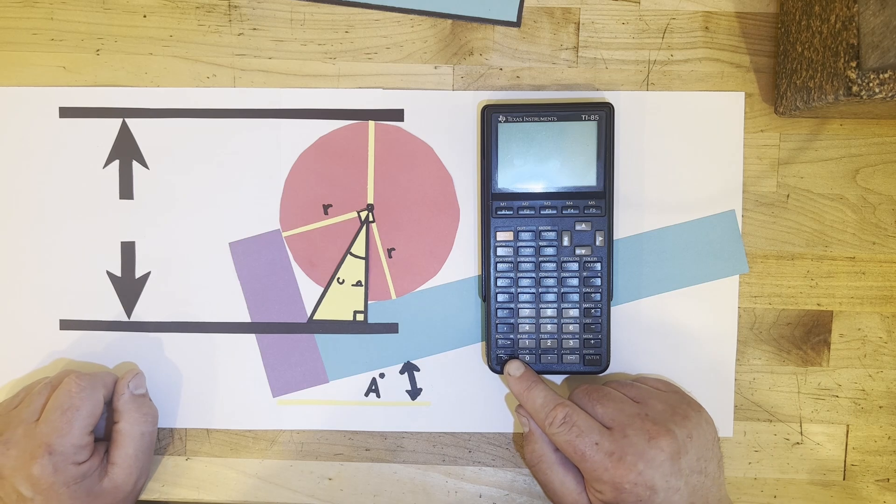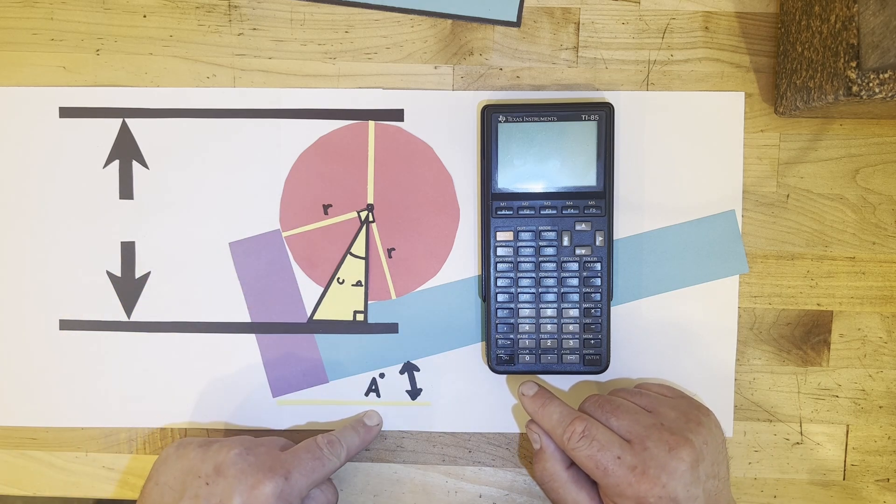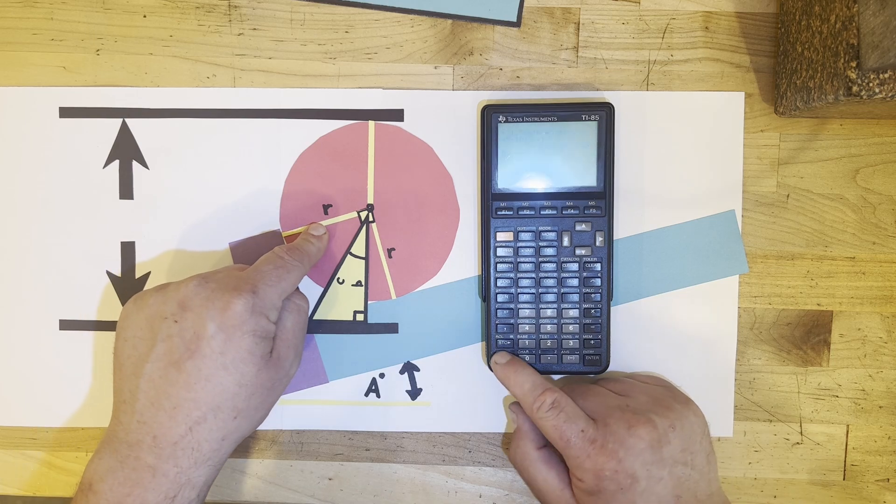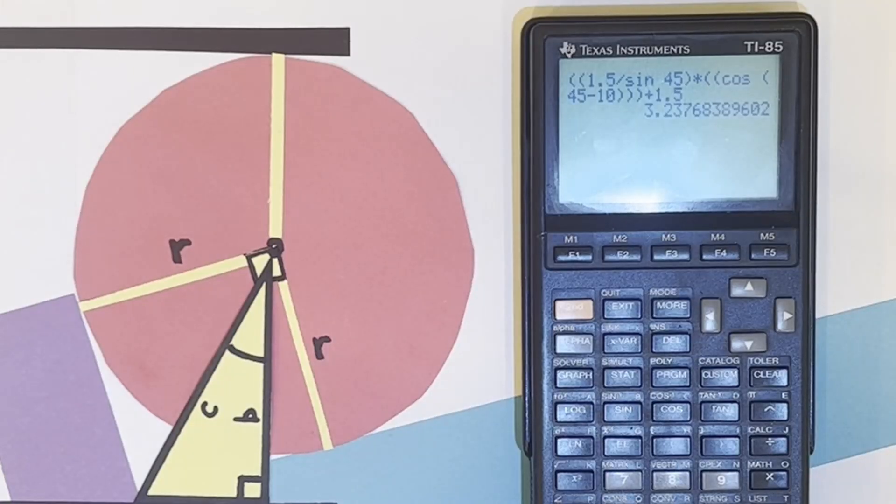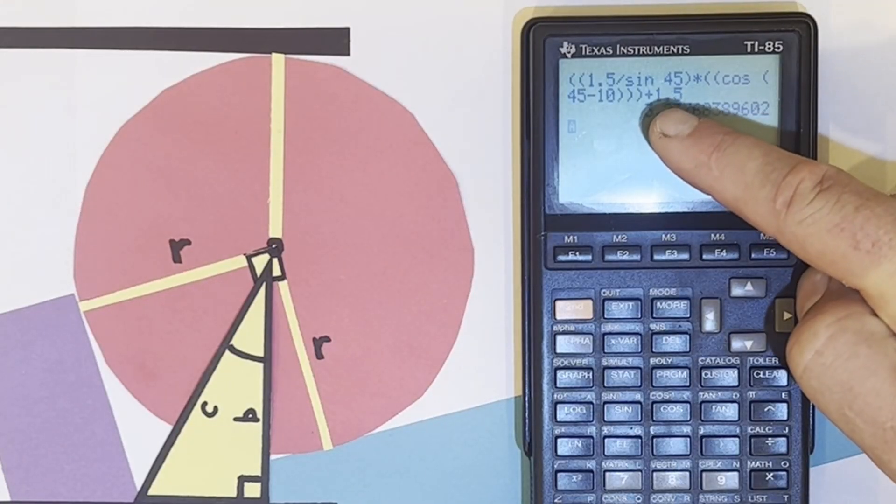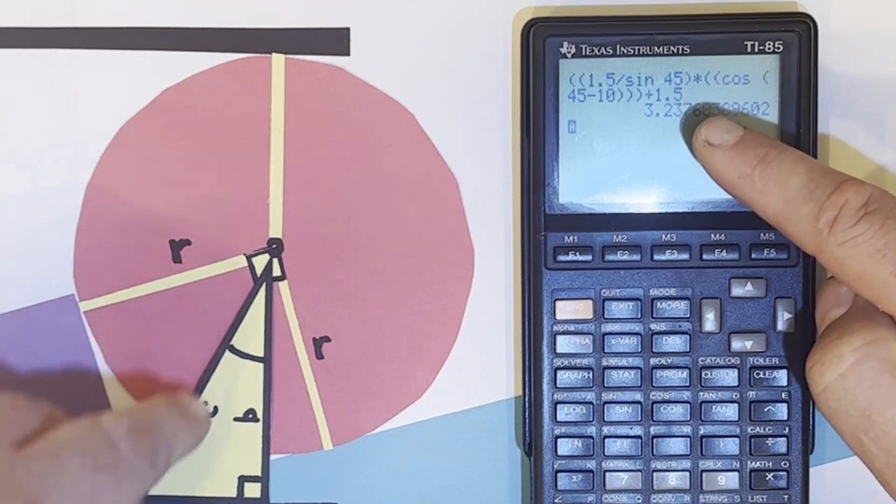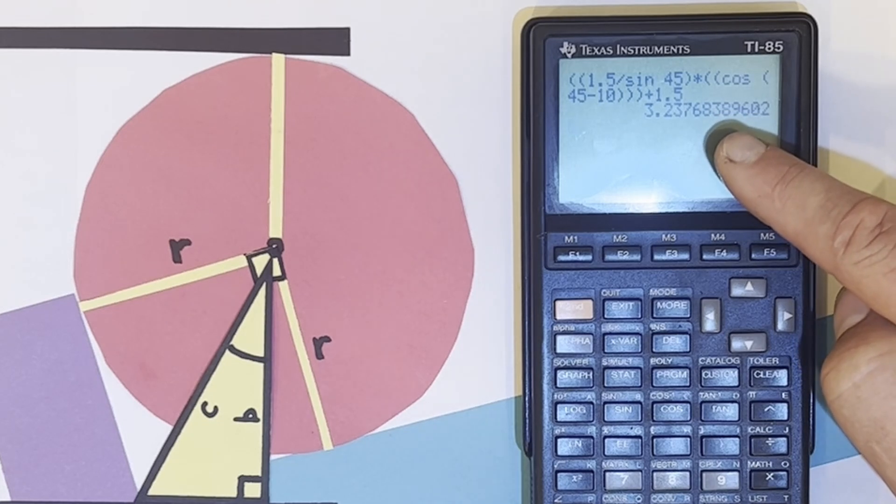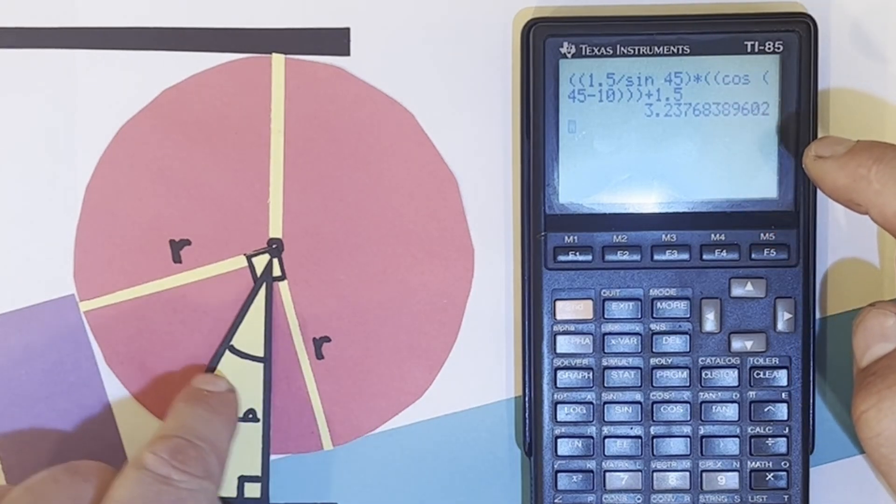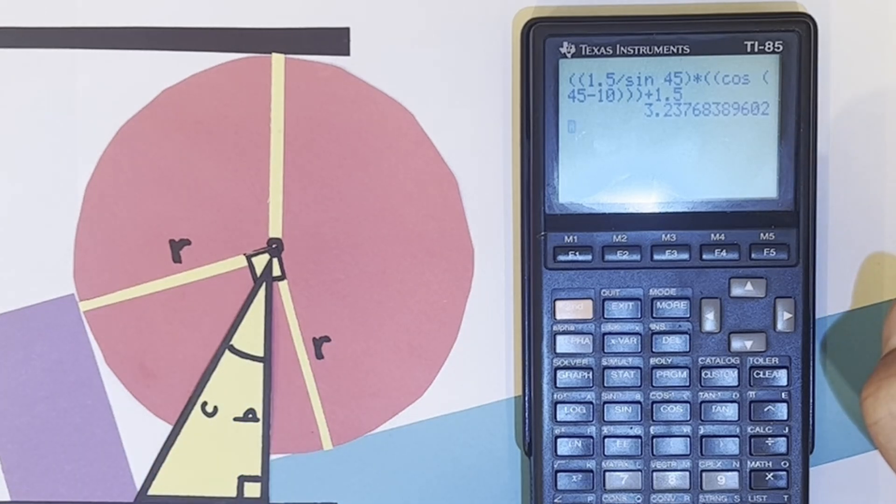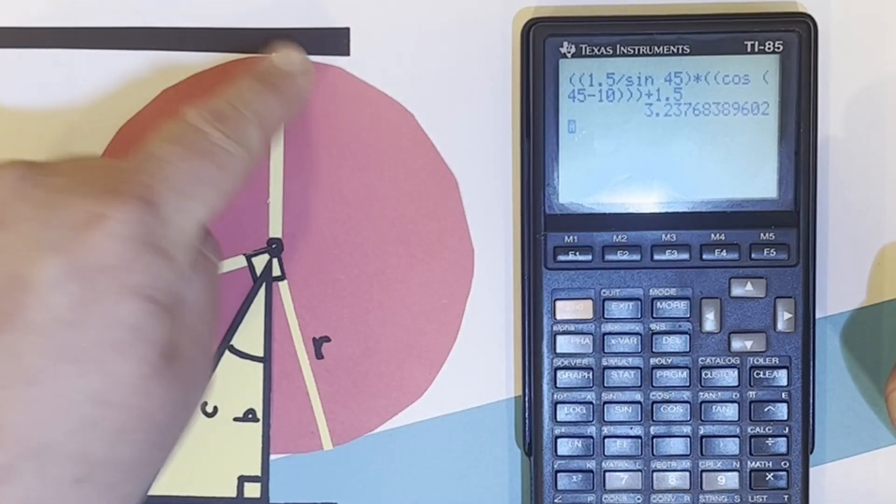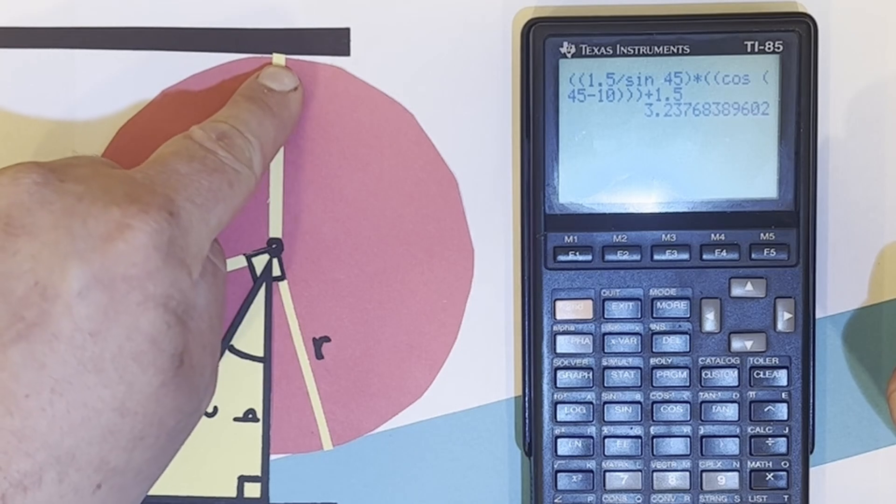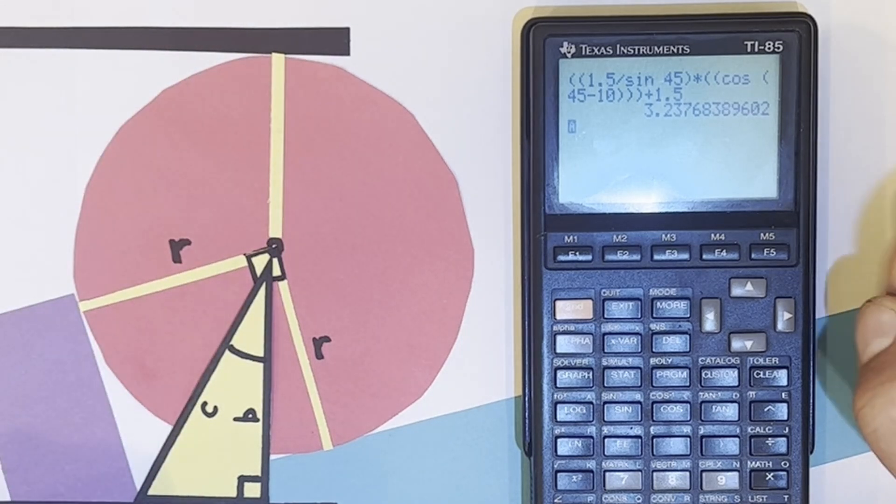In the calculator, let's pretend that angle A is 10 degrees and the radius is 1.5 millimeters. It would be 1.5 divided by the sine of 45, and that tells us length C, times the cosine of 45 degrees minus 10, plus 1.5. So we now know that the top of this three millimeter roll pin to the corner is 3.237 millimeters.